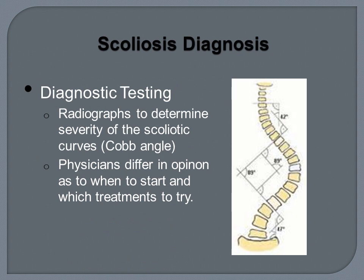X-rays are used to determine the severity of scoliosis curves through a measurement called the Cobb Angle. The Cobb Angle is measured by finding the most tilted vertebrae at the top and bottom of the curve. A line is drawn parallel to the superior vertebral endplate for the top vertebra and along the inferior vertebral endplate for the bottom vertebra. The angle formed where the two lines intersect is called the Cobb Angle.